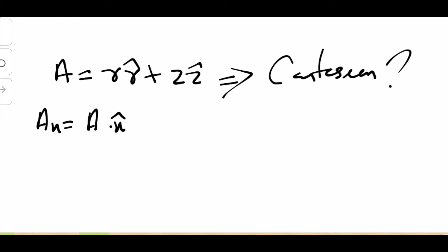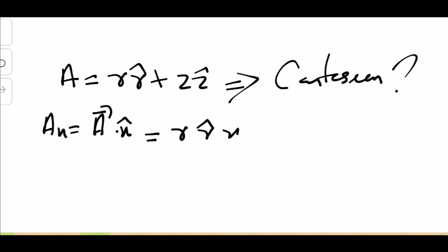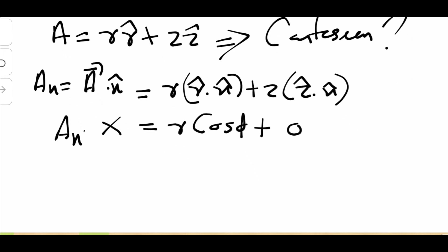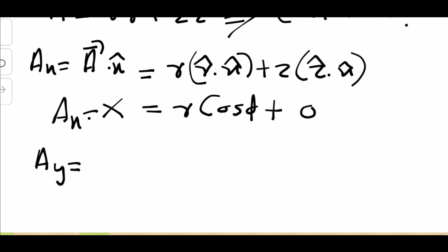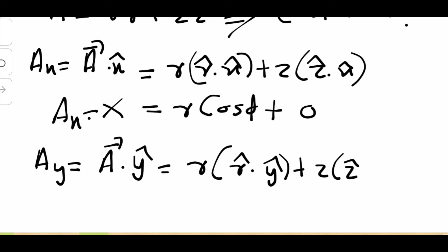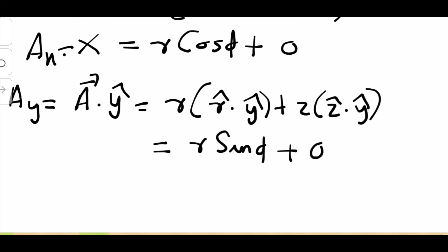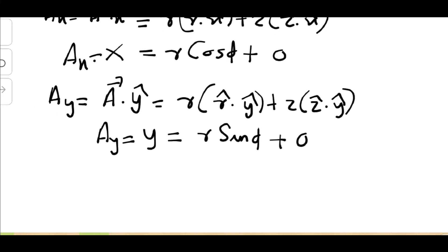To find Ax: A·x̂ = R (r̂·x̂) + Z (ẑ·x̂) = R cosφ + 0 = R cosφ. So the X component Ax equals R cosφ. For the Y component: Ay = A·ŷ = R (r̂·ŷ) + Z (ẑ·ŷ) = R sinφ + 0 = R sinφ.